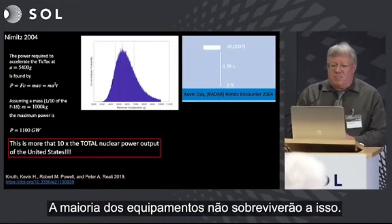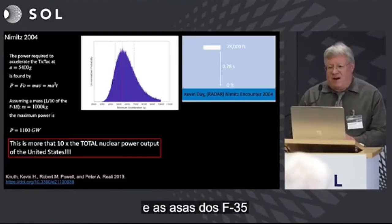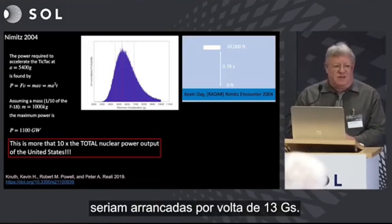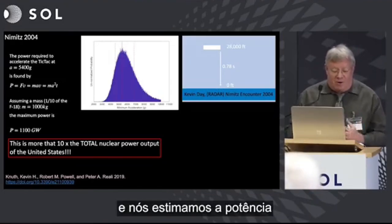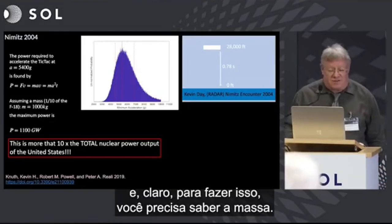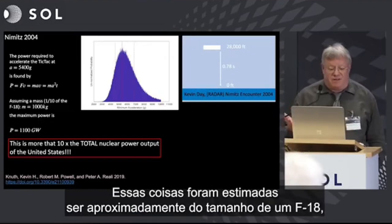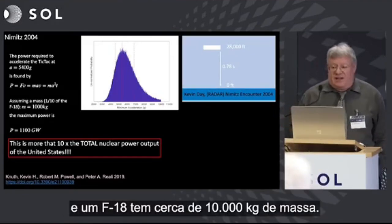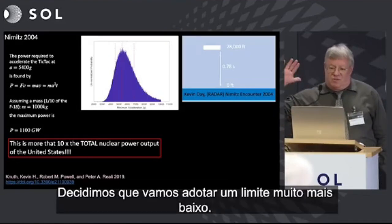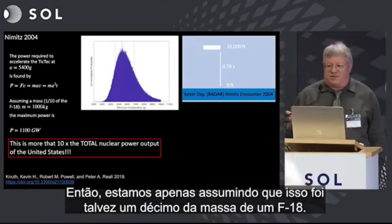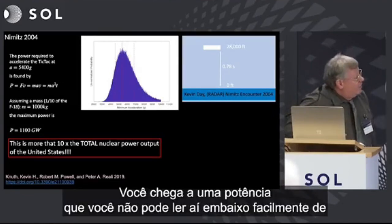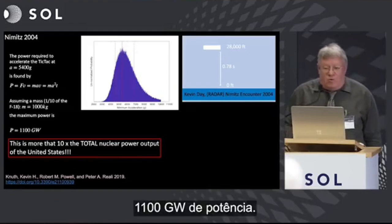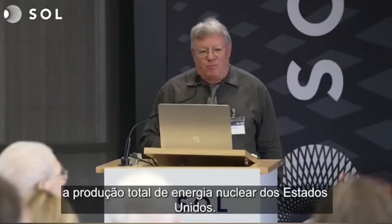People aren't going to survive 5,000 g's. Most equipment won't survive this. An F-35's wings will rip off at about 13 g's. So 5,000 g's is really anomalous. We also estimated the power — to do this you need to know the mass. We don't know the mass. These objects were estimated to be about the size of an F-18, which is around 10,000 kilograms. We took a lower bound of one-tenth of that, and you come out to a power of 1,100 gigawatts.